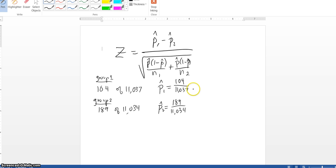Our pooled P hat, if we combine these into one group, is going to be the total number of men who had heart attacks, 104 plus 189, divided by the total number of men in the study, 11,037 plus 11,034.